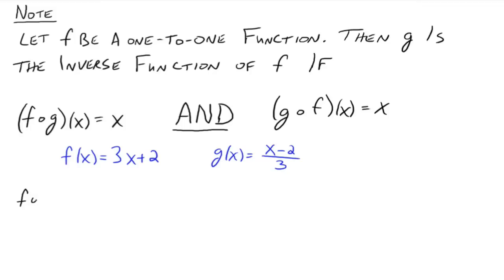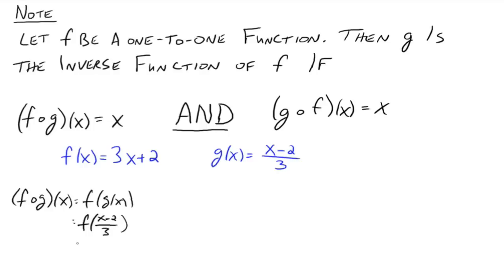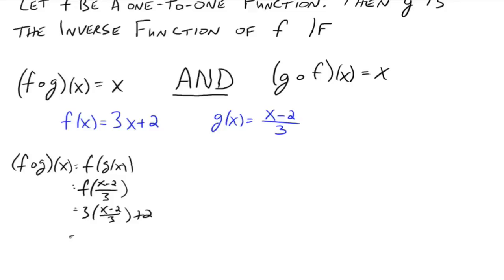So let's go back to our two functions. If we do this composition, f composed with g of x, then we're going to have f of g of x, which is f of x minus 2 divided by 3. And that's going to be 3 times x minus 2 over 3 plus 2, and that's going to go to x minus 2 plus 2, which just goes to x.